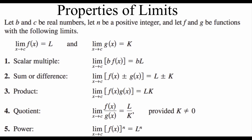We've also got this whole list of properties of limits that we're going to take a look at. Again, b and c are going to be real numbers, n is going to be a positive integer, and we've got these functions f and g. For these properties, we're going to say that the limit of f is L and the limit of g is K. Looking at this first property, if we've got a scalar multiple — our function f times some scalar b — we can find the limit of f first, this L value, and then multiply by whatever our b scalar is.